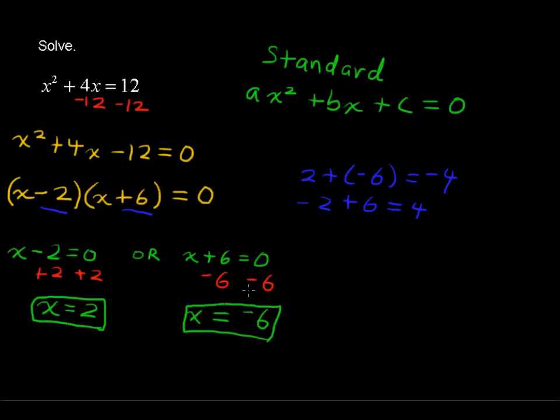So your two solutions are 2 and negative 6. That is, if you plugged in negative 6 in for x, it would make this equation true. You could write that in set notation. I'm sorry, not set notation, but you could write this just like this. That's another way to write those solutions.